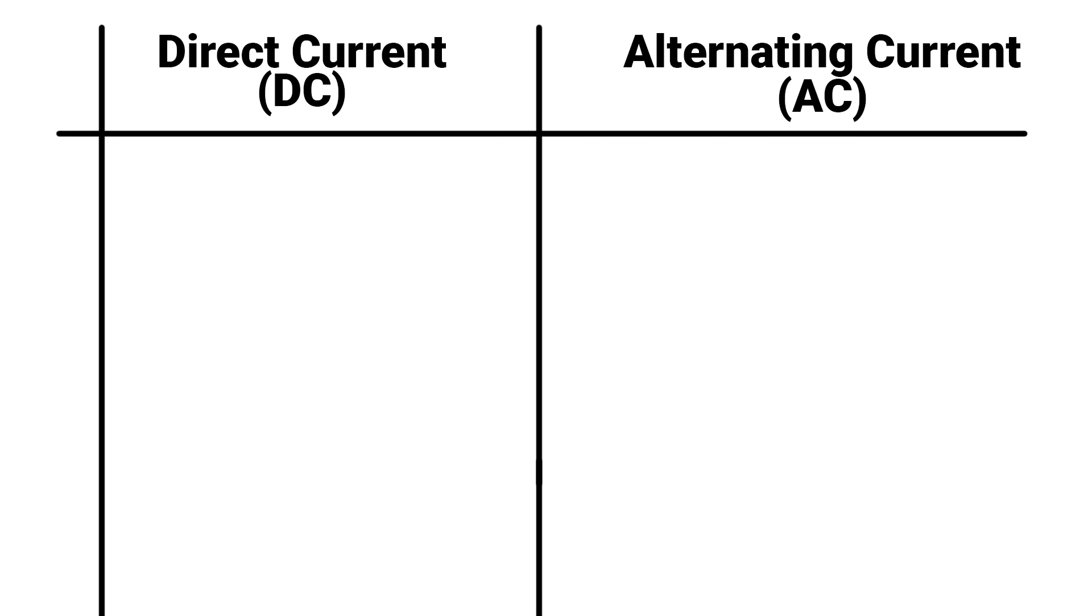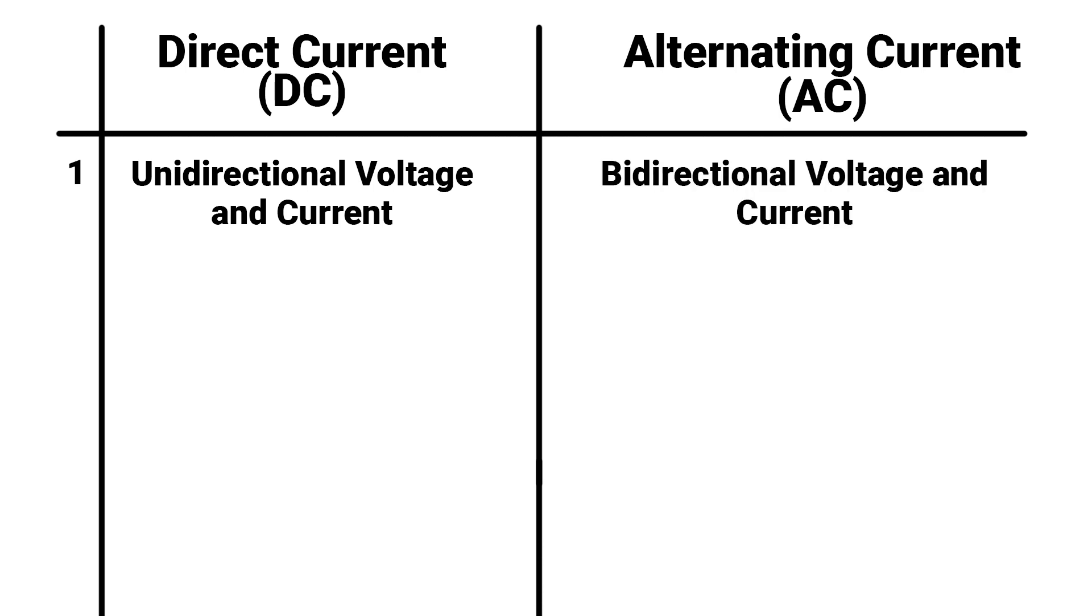So, as a recap here, DC is a unidirectional voltage or current which flows only in one way. But AC is a bidirectional voltage or current which alternates back and forth every half cycle.